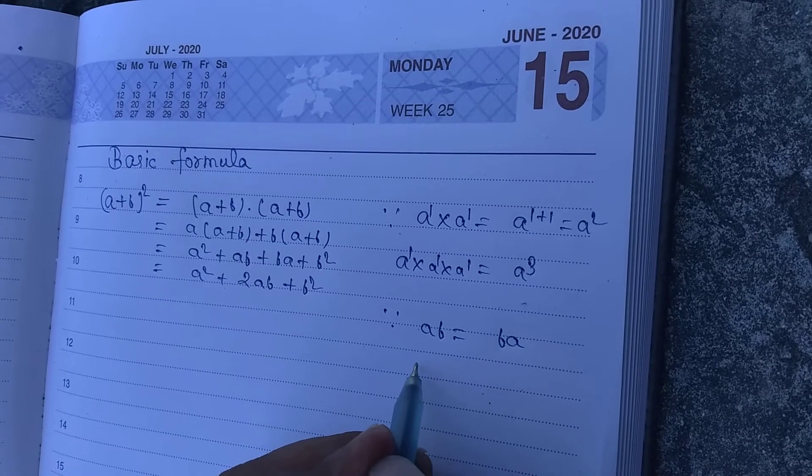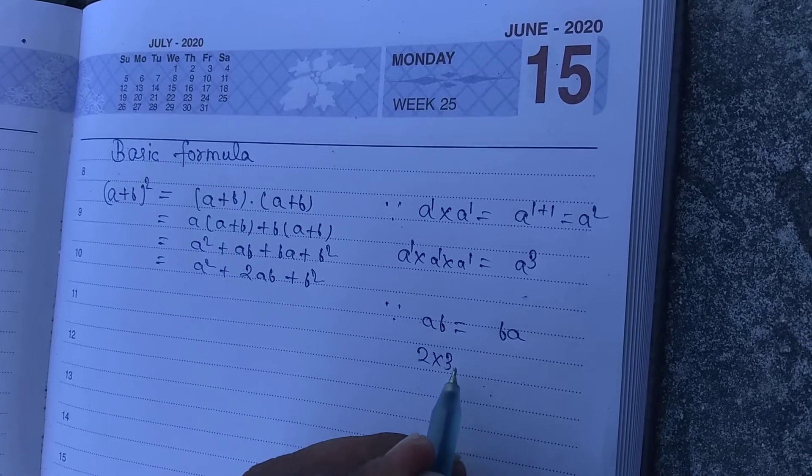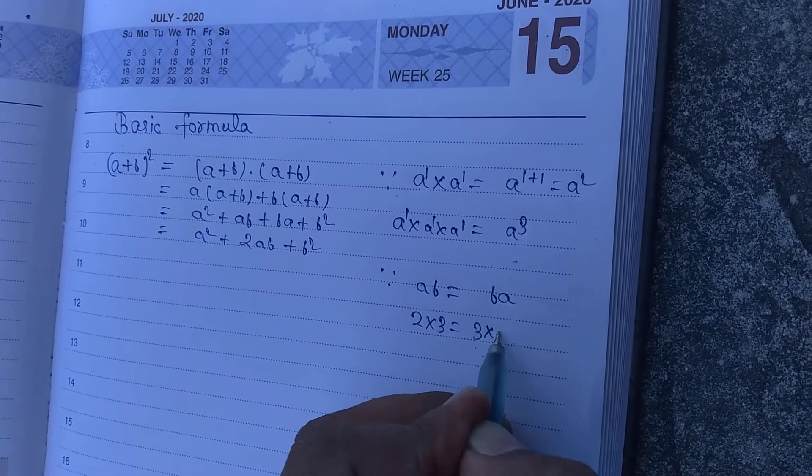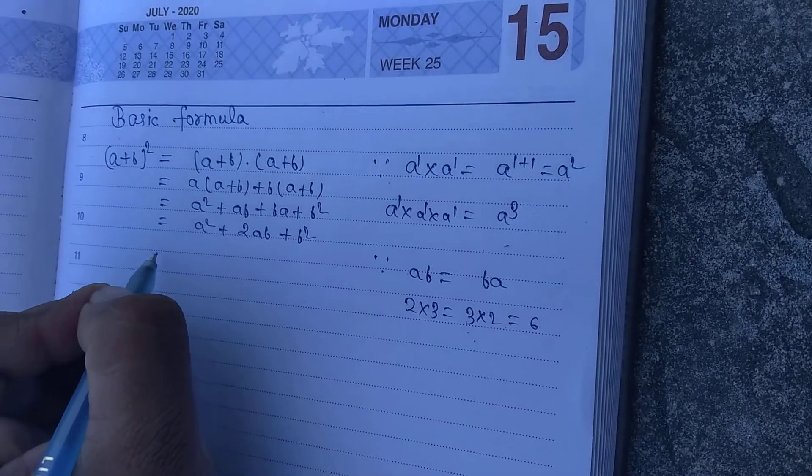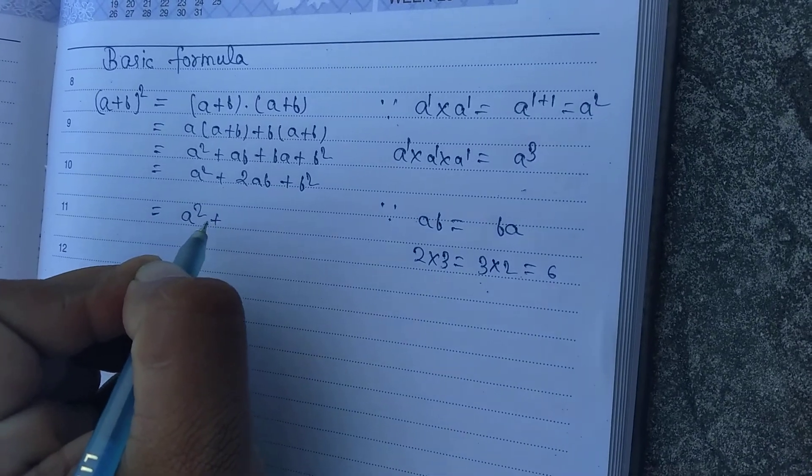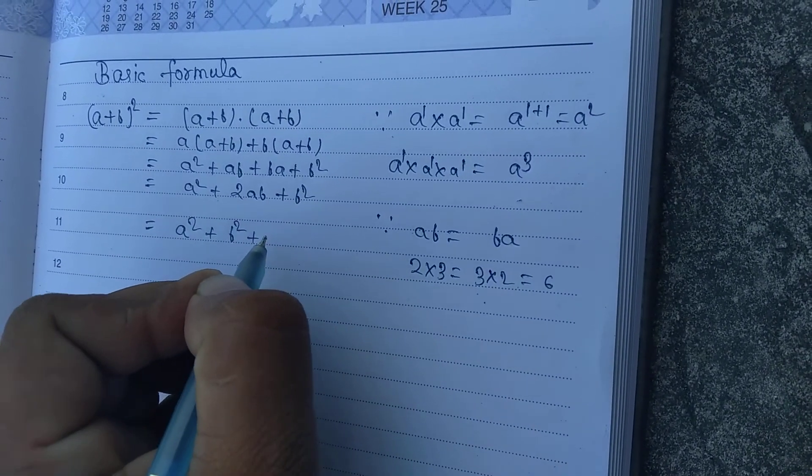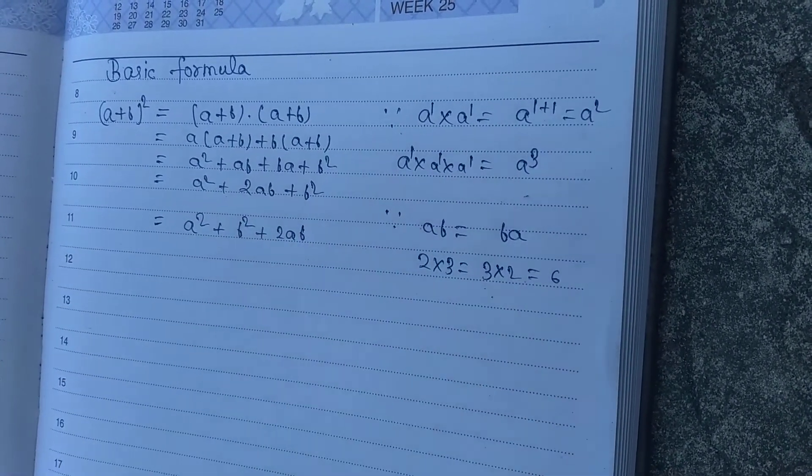Okay, because 2 into 3 equal to 3 into 2 equals 6. So we can write a square plus b square plus 2 a b.